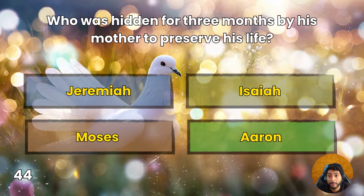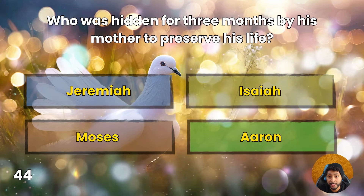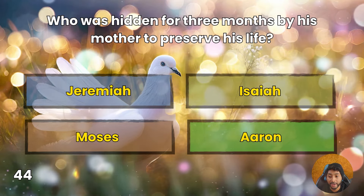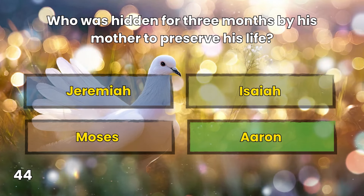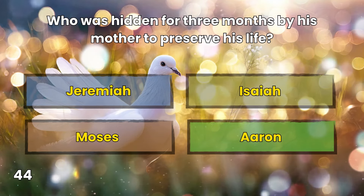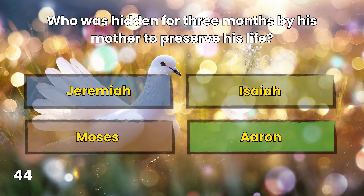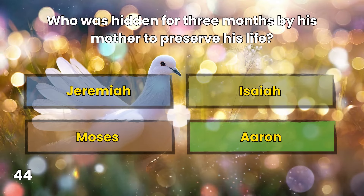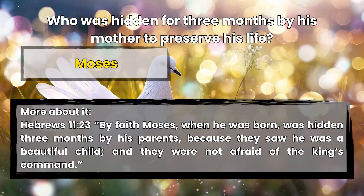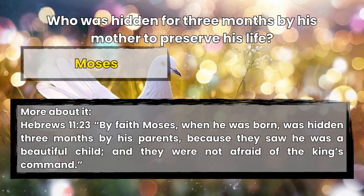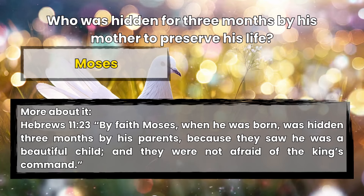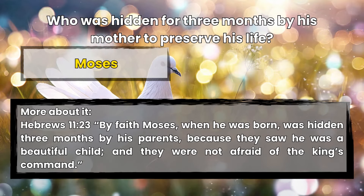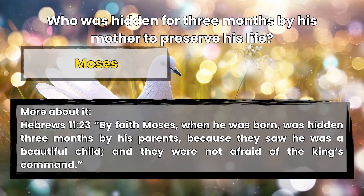Question 44: Who was hidden for three months by his mother to preserve his life? Nehemiah, Isaiah, Moses, or Aaron? Moses. Hebrews 11:23 — By faith Moses, when he was born, was hidden three months by his parents, because they saw he was a beautiful child, and they were not afraid of the king's command.